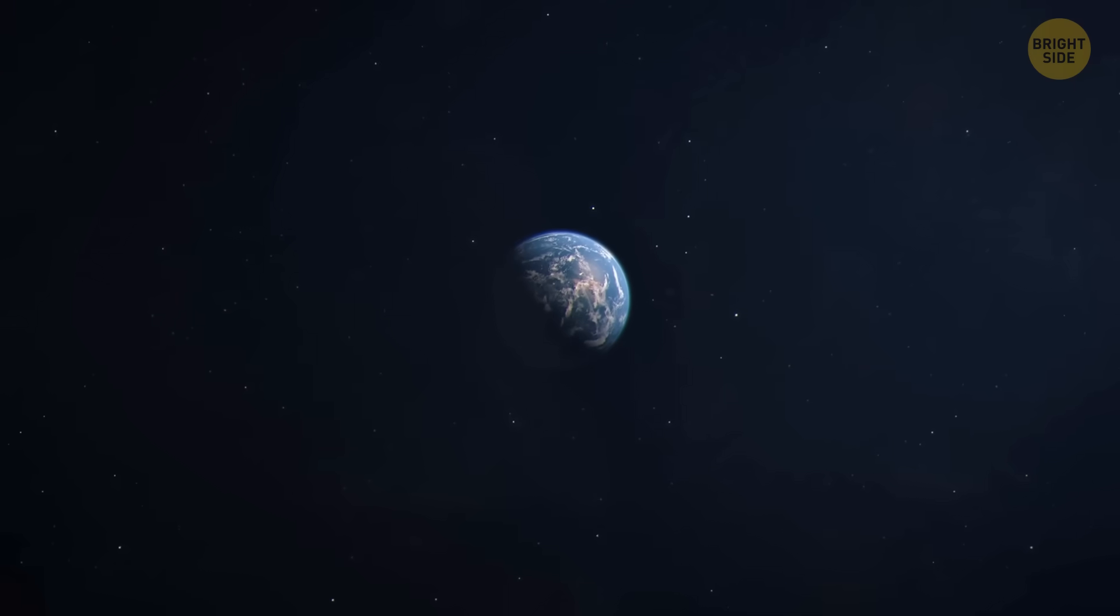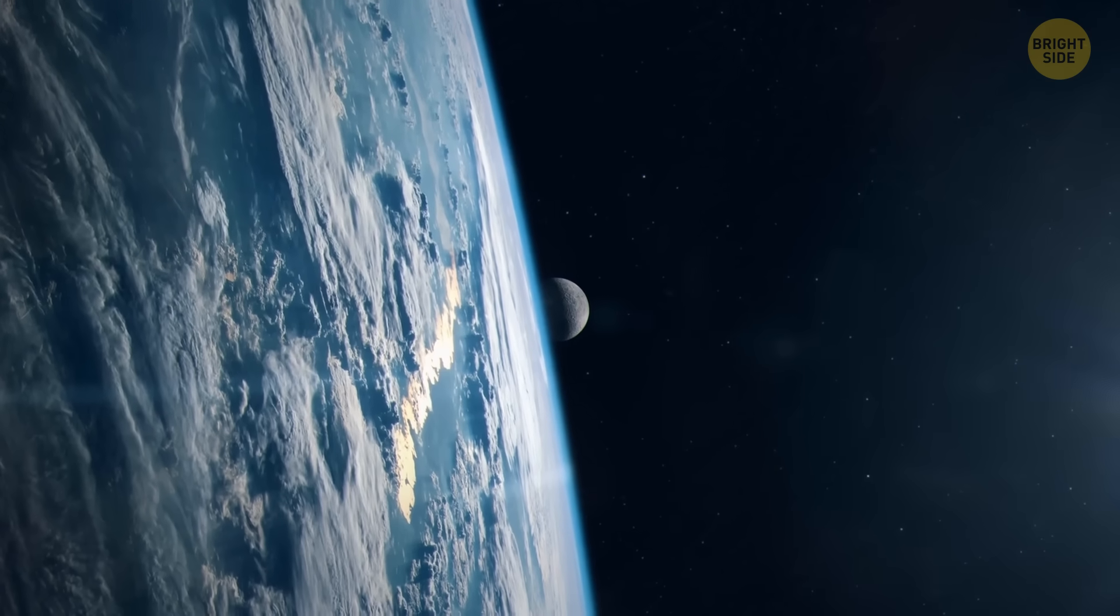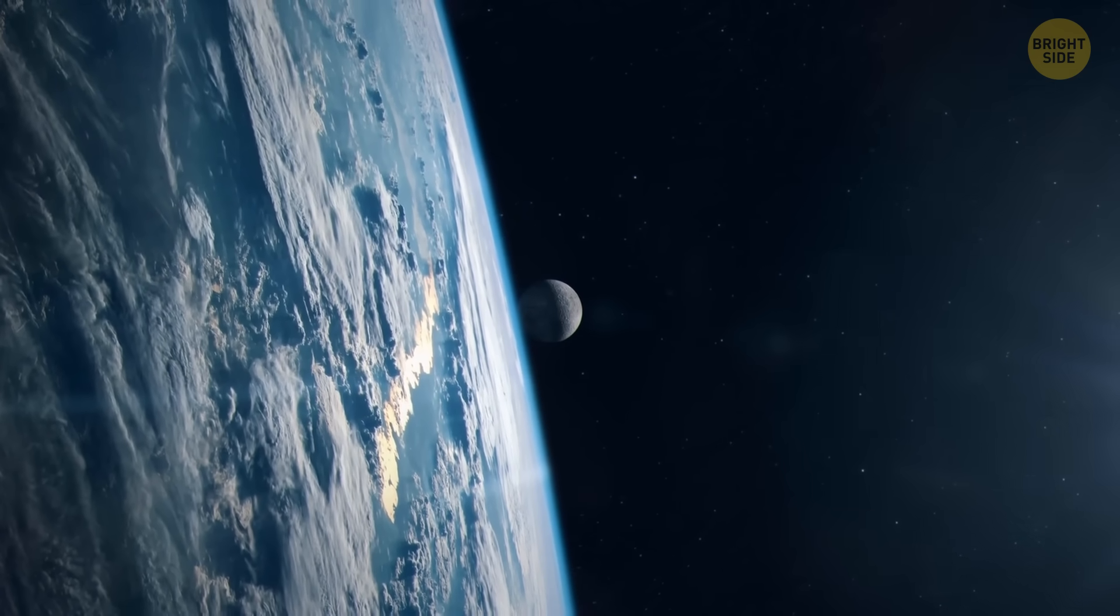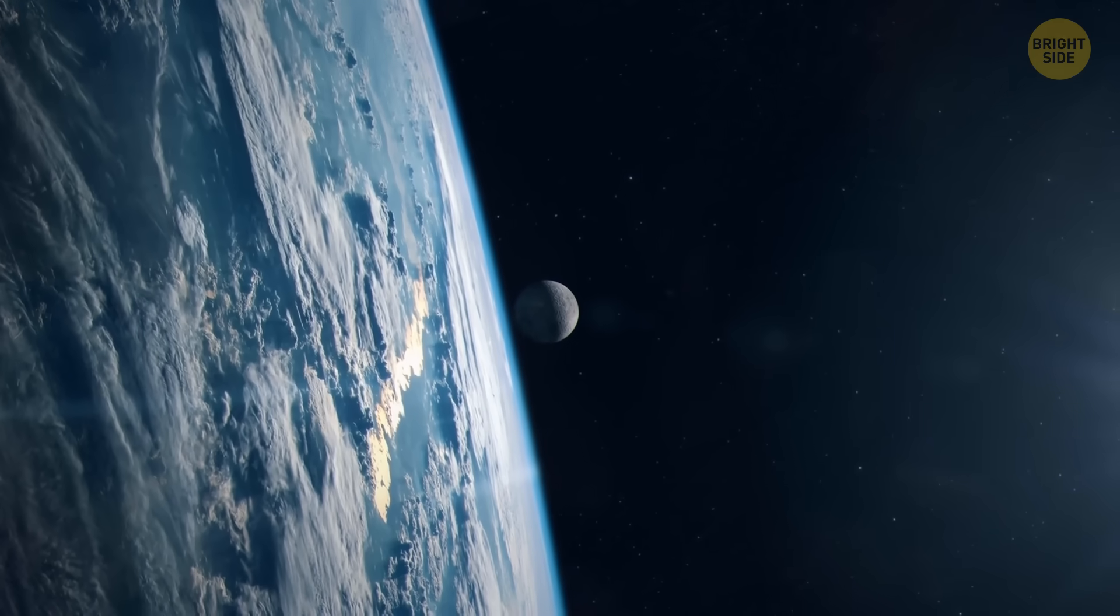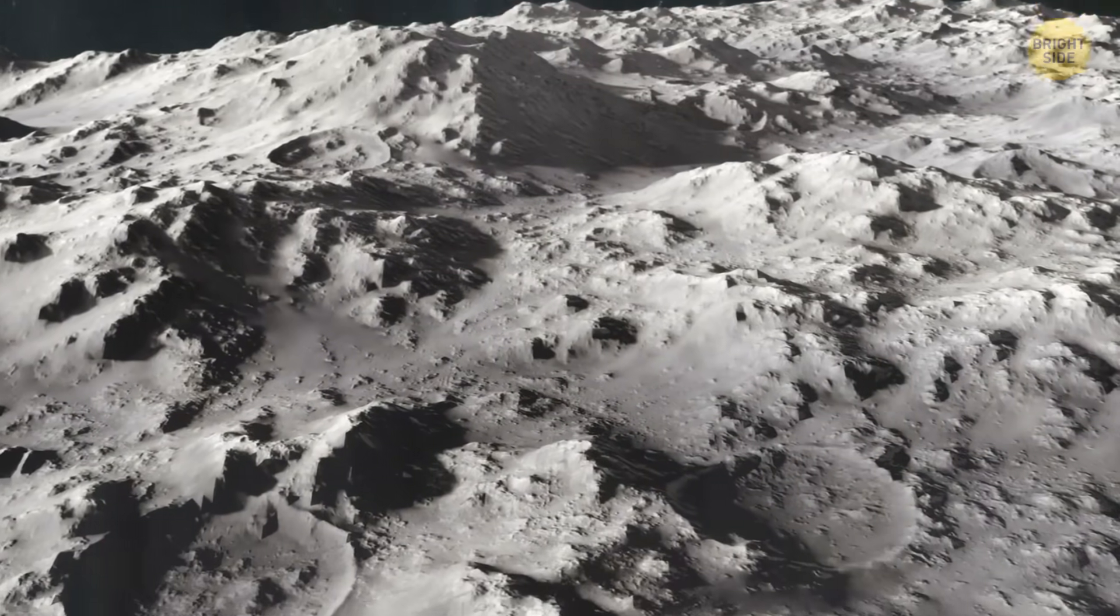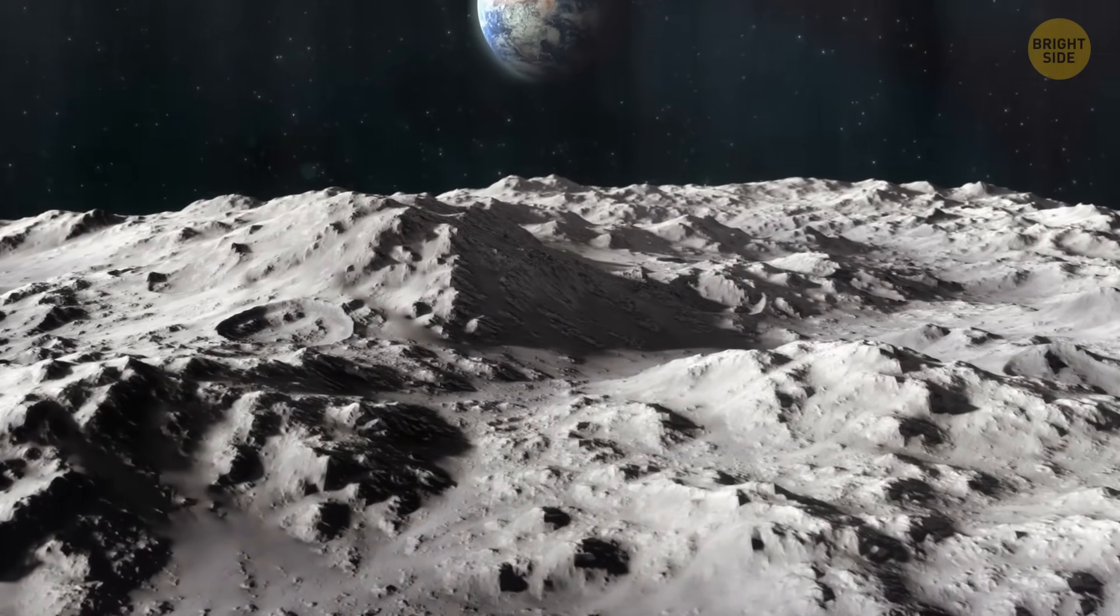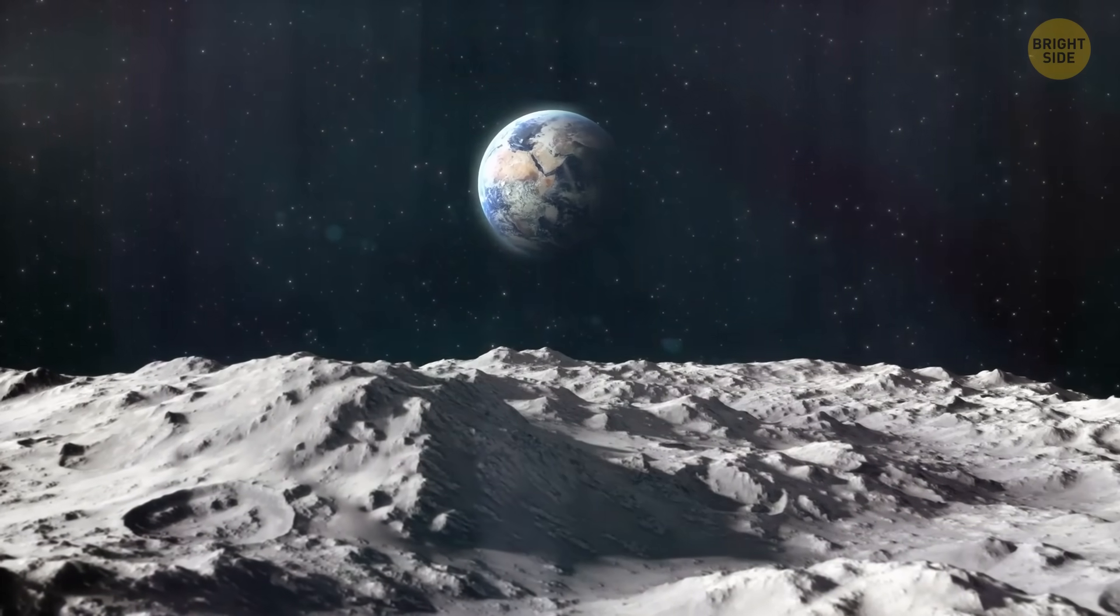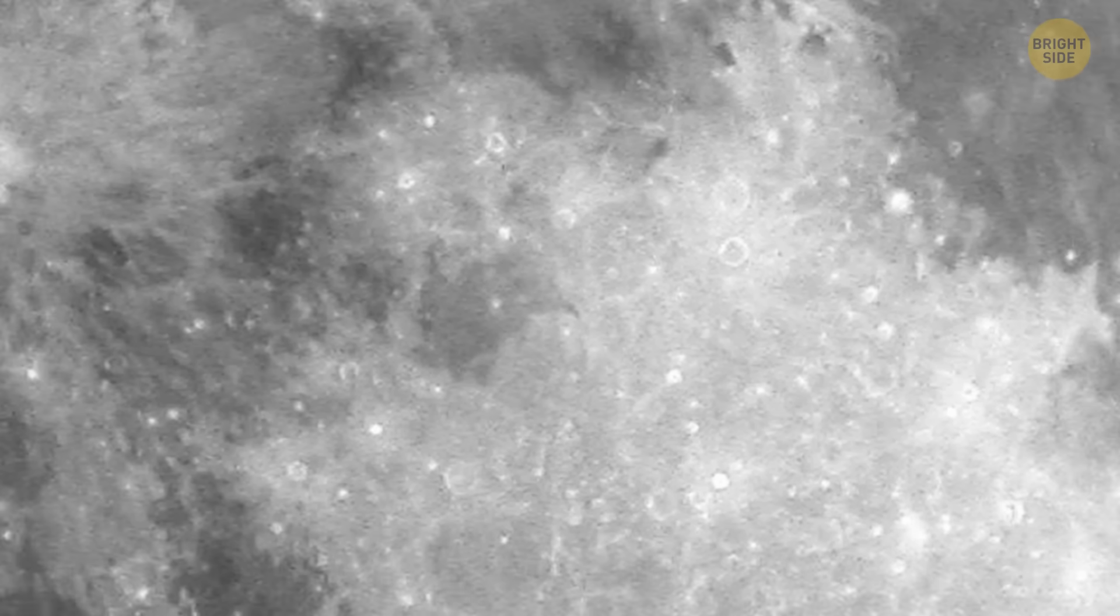So yeah, the moon and Earth are similar when it comes to rocks and some minerals. But the moon doesn't have the same atmosphere as our planet. Its atmosphere is thin and consists of some weird gases that include potassium and sodium, which is not something you can find in the atmosphere of Mars, Venus, or Earth. And the rocks on the moon don't contain water. But that doesn't mean there's no water at all up there.